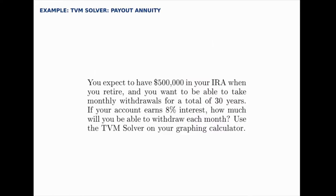In this example, we'll use the TVM solver with a payout annuity. The question reads: You expect to have $500,000 in your IRA when you retire, and you want to be able to take monthly withdrawals for a total of 30 years. If your account earns 8% interest, how much will you be able to withdraw each month using the TVM solver?